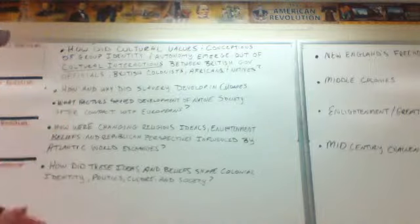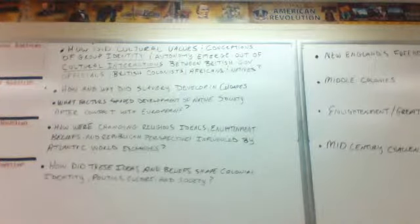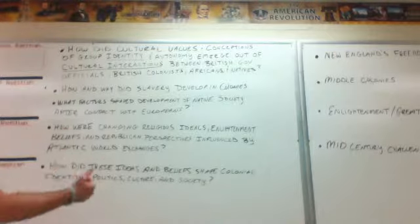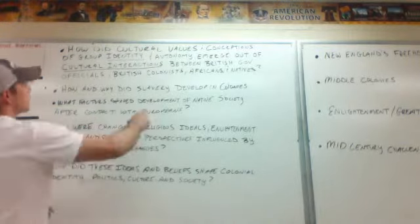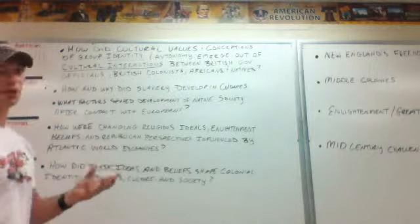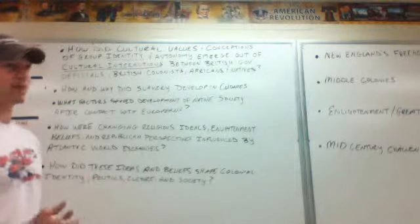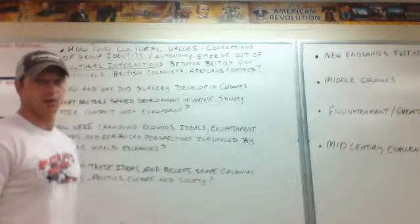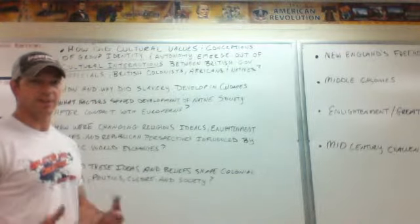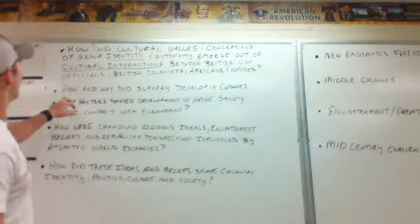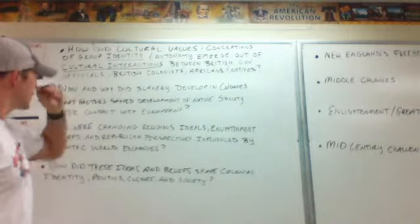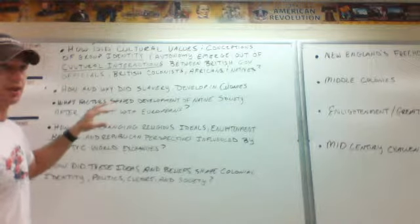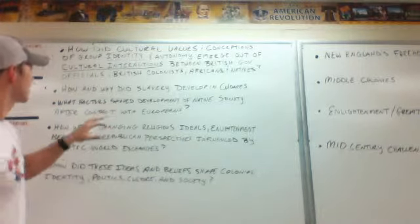Some review questions: How do cultural values, conceptions of group identity, and autonomy emerge out of interactions between British government officials, British colonists, Africans, and Native peoples? Autonomy means that you run yourself — if the colonies are legislating and making laws for themselves, that's autonomy. How and why did slavery develop in the colonies? Keep in mind geography plays a huge role, and economically speaking, it made sense to have slaves in the South.